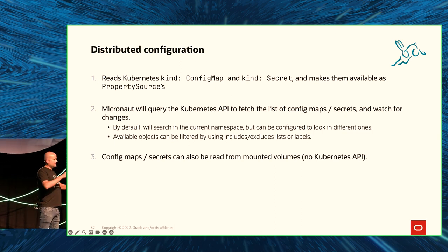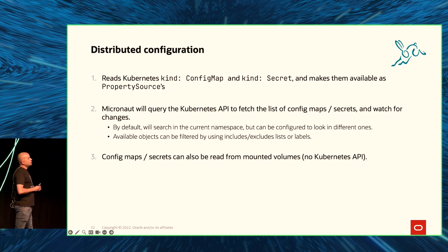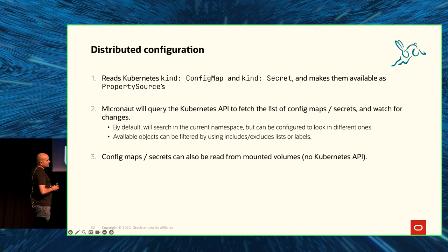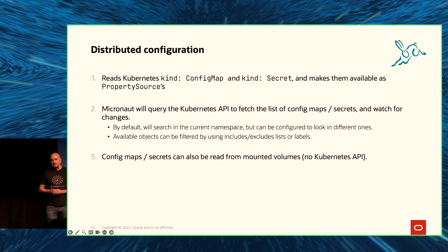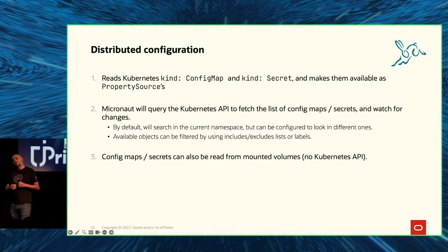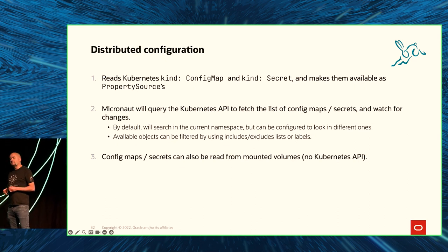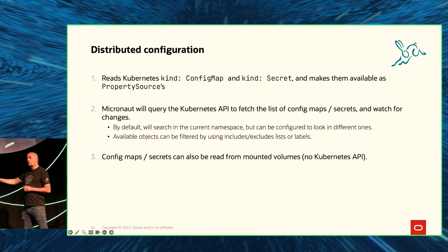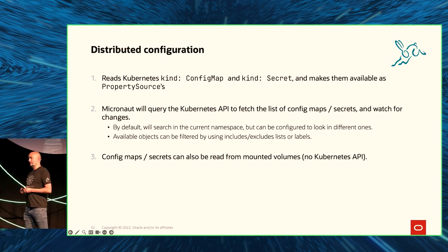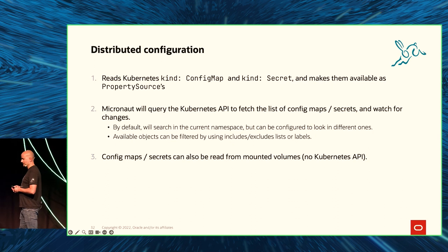There are different options here. For example, if you don't want to grant your application access to the Kubernetes API — for whatever reason in the Kubernetes RBAC model — you can mount those config maps and secrets as volumes, and Micronaut will read those files and enable them as property sources.